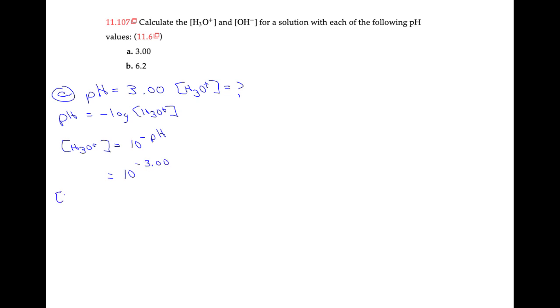And we find out that our concentration of hydronium, when we put that into our calculator, is 1.0 times 10 to the negative 3 molar. Then we can use the formula, so that's the first part of our question.